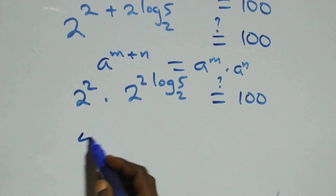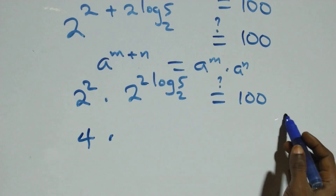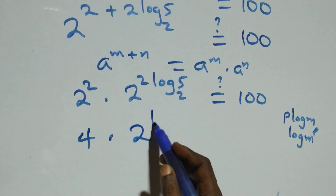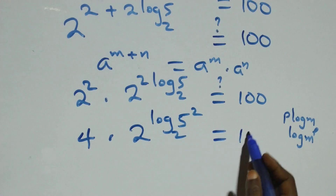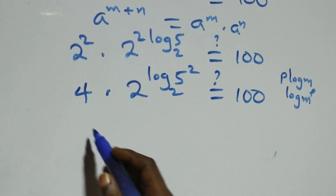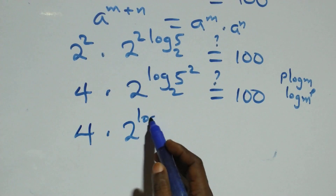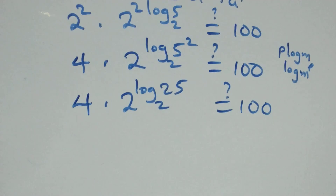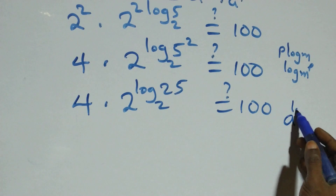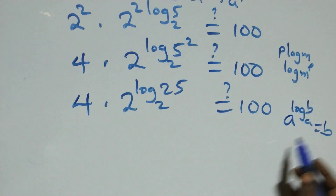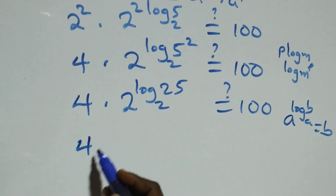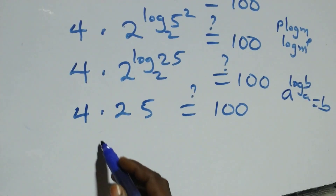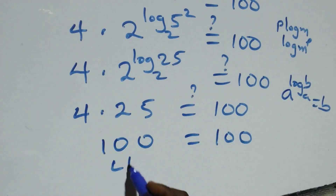Two squared is 4. Then, reversing the power rule of logs: p log m is the same as log m raised to power p, so 2 log₂ 5 becomes log₂(5²). Using the rule a raised to power log_a(b) equals b, we get 4 times 25, which equals one hundred. So 4 times 25 gives us one hundred.